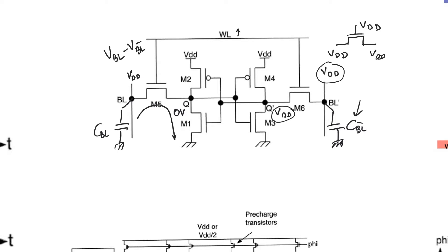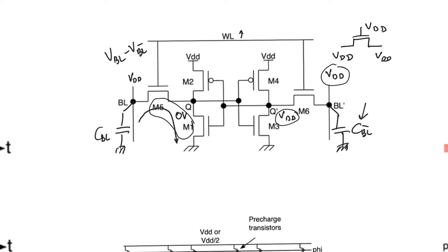Pre-charging the bitline and bitline bar to a value of VDD has a couple of disadvantages. One of them is that the difference between the bitline and bitline bar is actually being created by a single side of the cell. All of the effort to discharge or charge the capacitors is being done by M1 and M5 — specifically, all of the effort is being done by the side storing 0. The other side just finds itself in a steady state, so to create a certain delta VBL we probably have to wait longer.